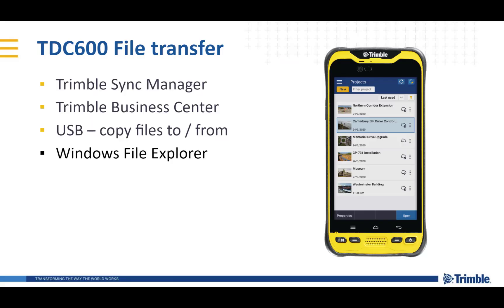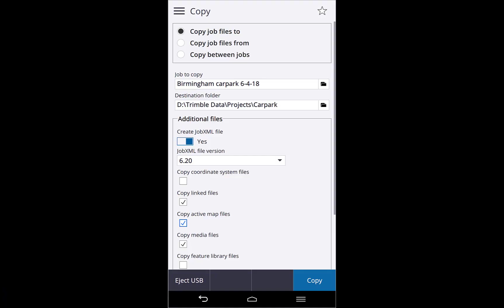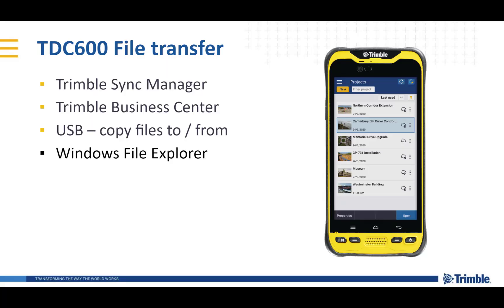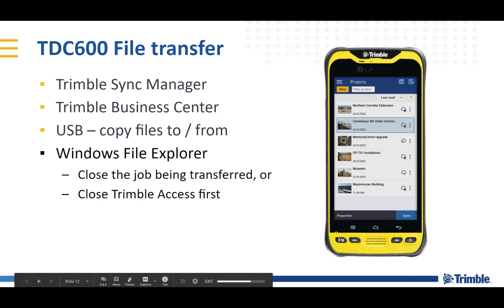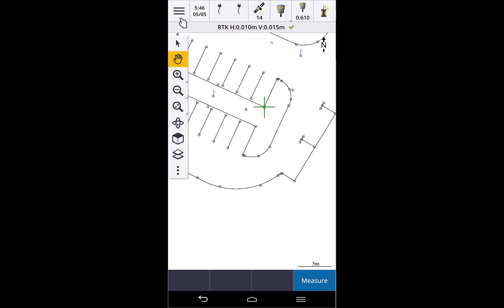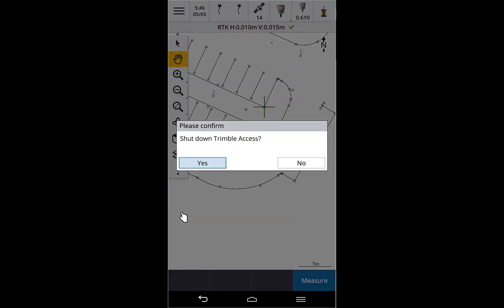Workflows for downloading your survey data to the office are similar on Android too. You have a number of choices: you can use Trimble Sync Manager, Trimble Business Center, or USB sticks using the Trimble Access Copy Files To and From functionality. You can also use Windows File Explorer via a cable, like you do to get photos off your phone. But be careful — always make sure you shut down Trimble Access, or at least close the job you're transferring, to ensure you get the entire job.